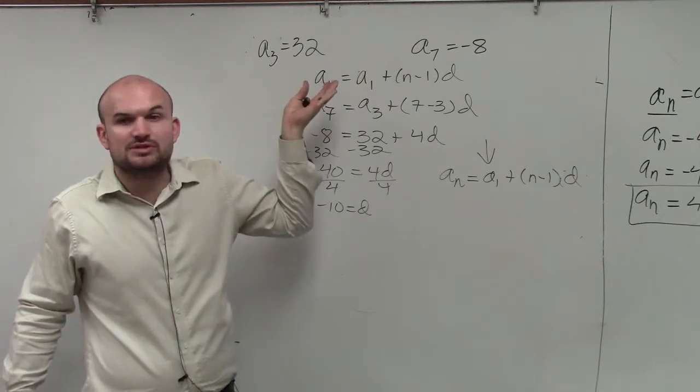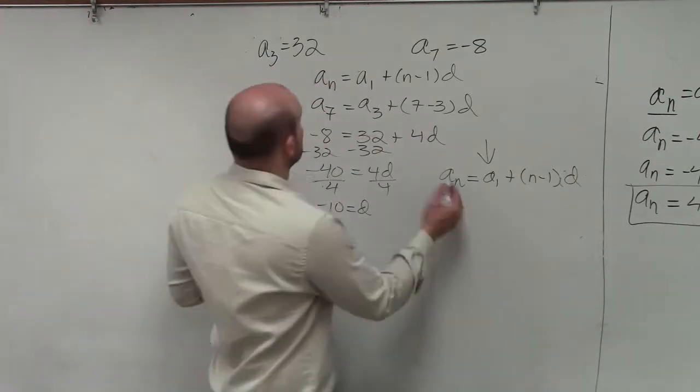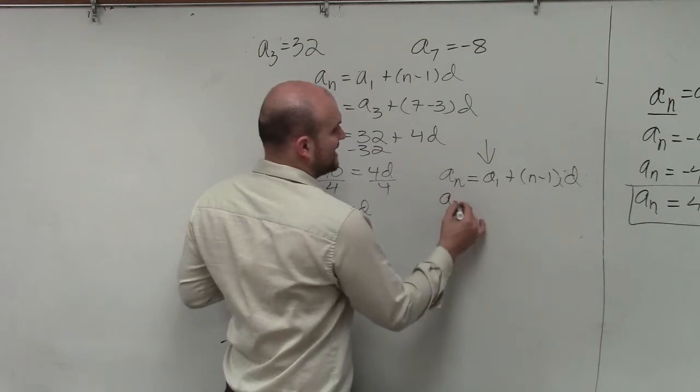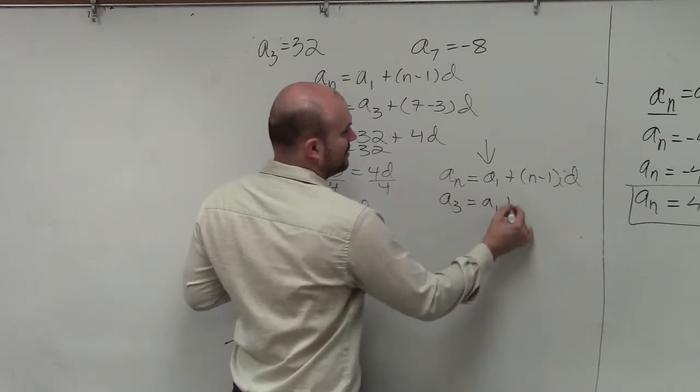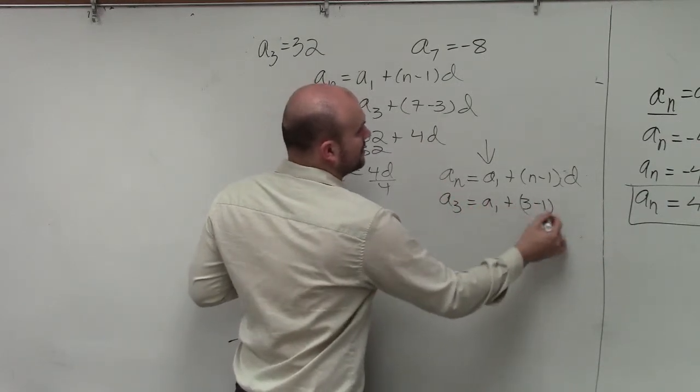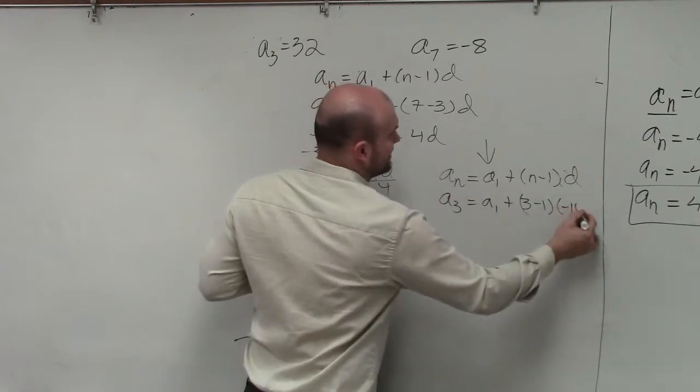It doesn't matter which ones you guys want to choose. So if I use a sub 3, then I'll say a sub 3 equals a sub 1 plus 3 minus 1 times d, which is negative 10.